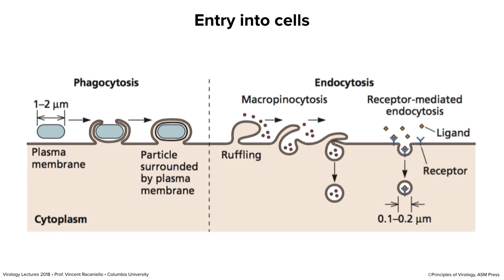Most viruses are brought in by receptor-mediated endocytosis, a very specific process designed to bring specific things into the cell. For example, iron-binding proteins called transferrins bind to transferrin receptors on the cell surface and are taken up by receptor-mediated endocytosis. A ligand binds its receptor, is taken up by endocytosis, and eventually released into the cytosol. This is a cellular process that has been usurped by viruses to get into cells.